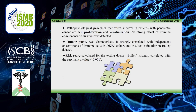To conclude, we made the following observations. First, pathophysiological processes that affect survival in patients with pancreatic cancer are cell proliferation and keratinization. No strong effect of immune components on survival was detected. Second, tumor purity was characterized — it strongly correlated with independent observations of immune cells in the KFZ cohort and in silico estimations in the Bailey dataset. Third, the risk score calculated for the testing dataset Bailey strongly correlated with survival.